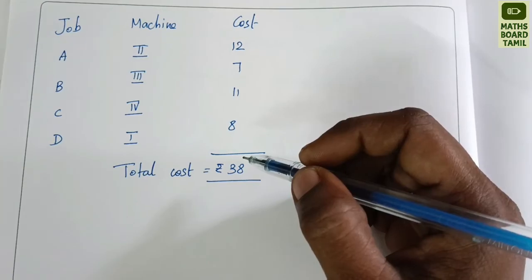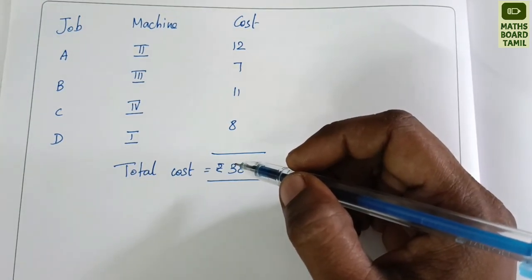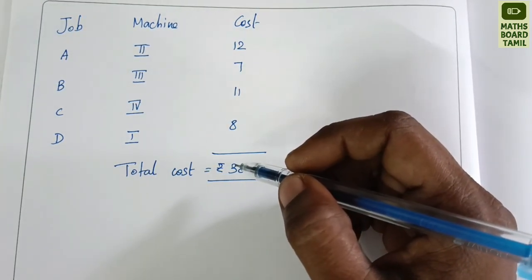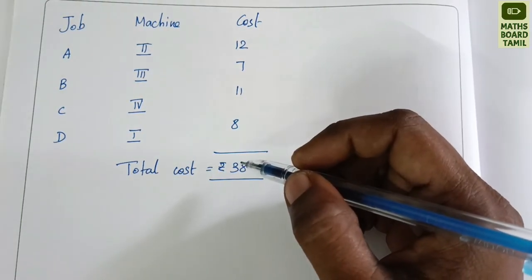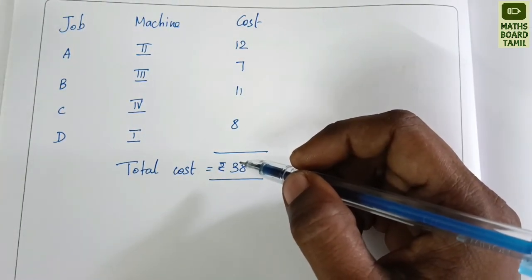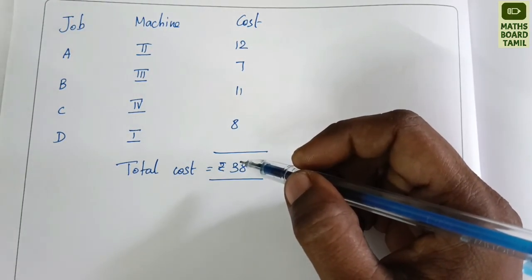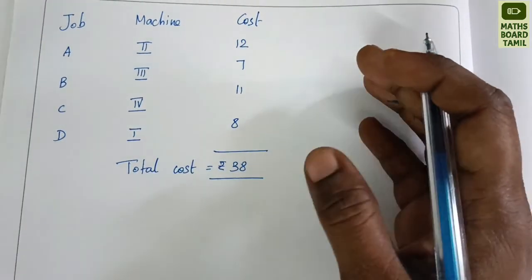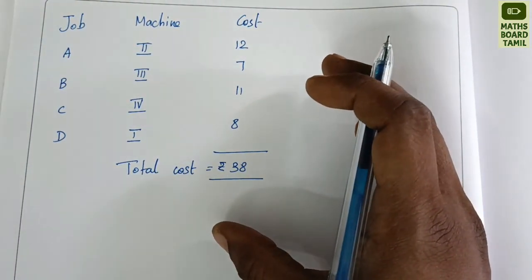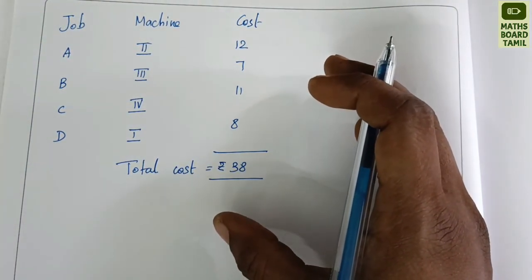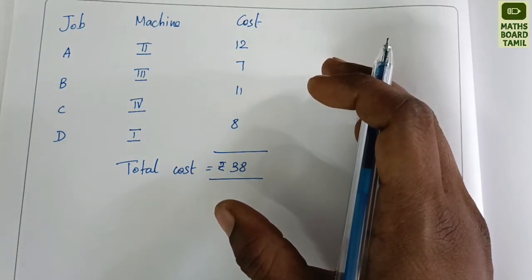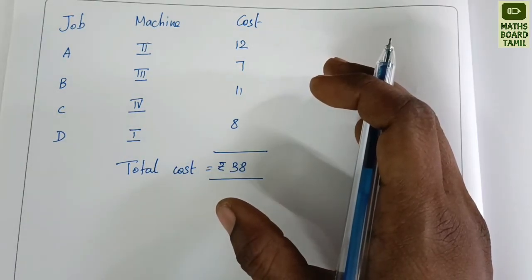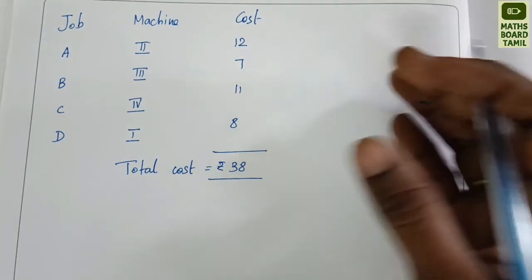So the assignment problem is solved using the Hungarian method. We find the number of lines, number of allotted cells, and check that rows and columns are equal. If you like the video, please share with your friends, like, and subscribe. Thank you.